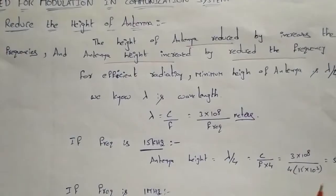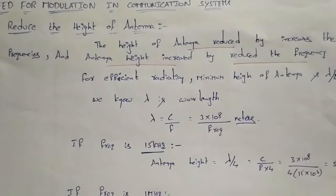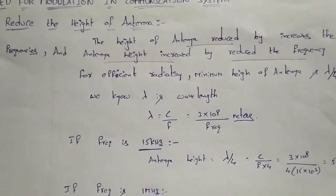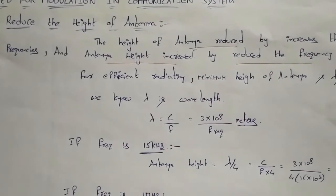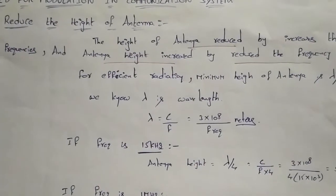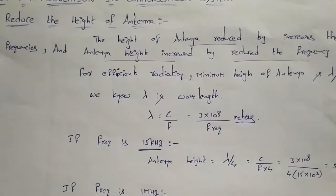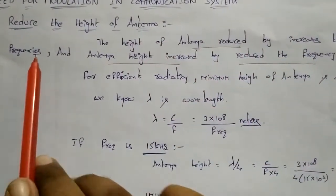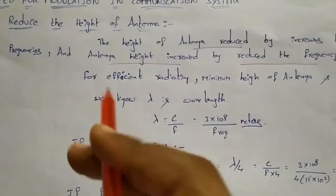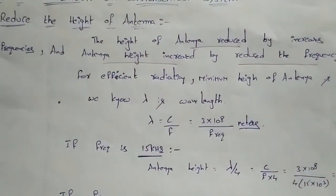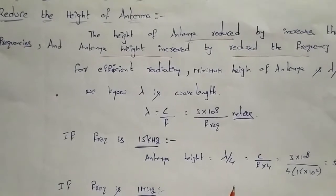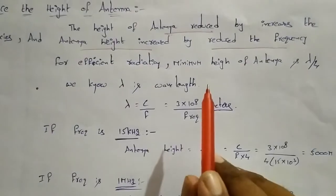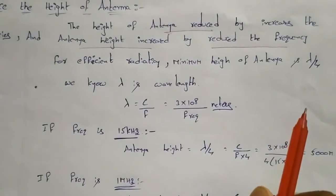On a mobile device, the frequency is high, so it is very easy to radiate. Because the frequency is high, the antenna height is reduced, making the mobile device compact and practical.